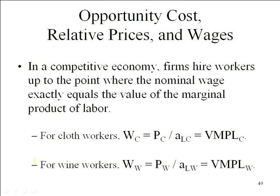We will continue to hire until the wage we have to pay equals the marginal product. This is an equilibrium condition. The wage is what you have to pay workers to come work with you — total compensation, not just the wage. The value of the marginal product is the additional revenue that worker's efforts bring into the firm. As long as a worker can bring in more than what you have to pay, you're going to hire that person. You'll continue to hire additional workers until you reach this equality. This is the equilibrium condition.